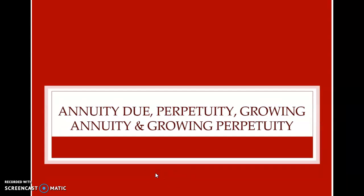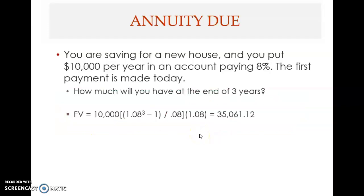Welcome to this clip. We are going to look at some variants or different types of annuities. We are still in chapter 6. We will look at annuity due, perpetuity, growing annuity, and growing perpetuity. So there are five types here.